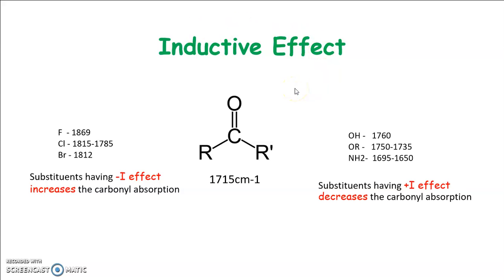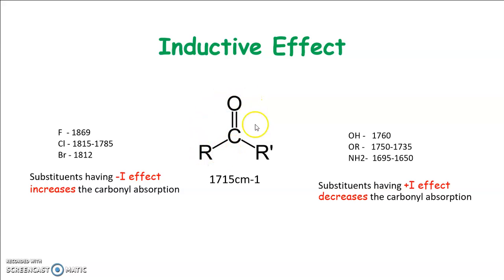We will discuss how the inductive effect affects the CO-stretching frequency of ketones. If R is replaced by substituents having a -I effect such as chlorine or bromine, the carbonyl absorption increases, as the electron-withdrawing group strengthens the CO-bond and the frequency of absorption increases. While substituents having a +I effect will decrease the carbonyl absorption frequency.